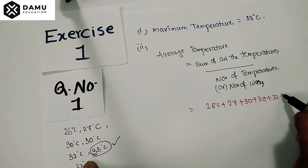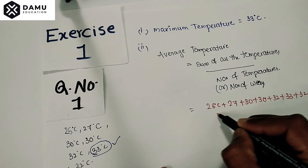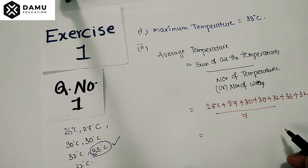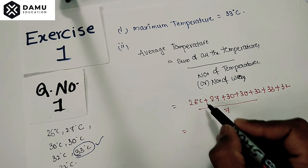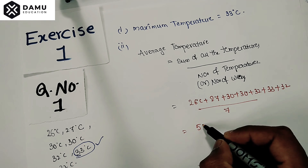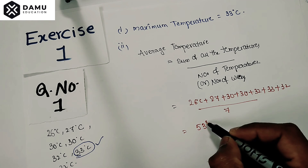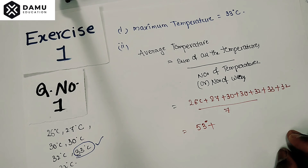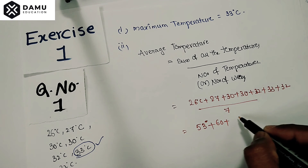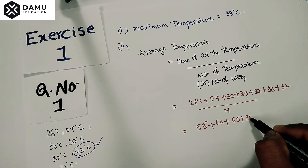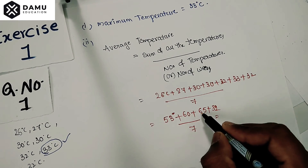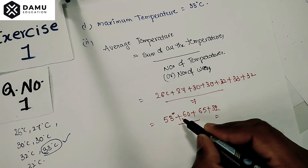The sum of all temperatures is: 26 + 27 + 30 + 30 + 32 + 33 + 32, divided by 7 days. First, 26 + 27 = 53, then 53 + 30 + 30 = 113, then adding 32 + 33 + 32 gives the remaining values.